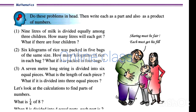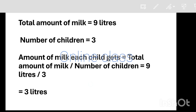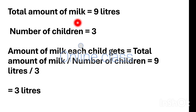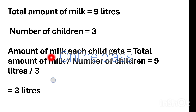We have a statement. The total amount of milk is 9. The number of children is 3. To get the amount of milk each child gets, we divide the total amount of milk by the number of children.